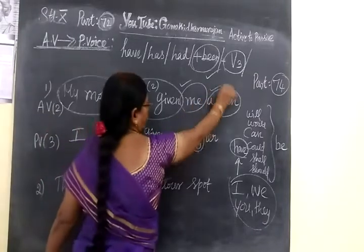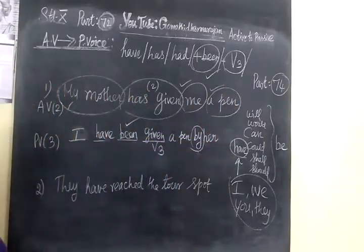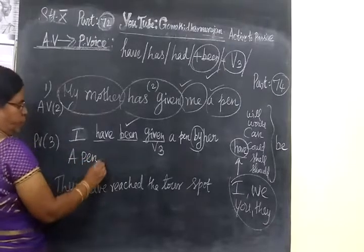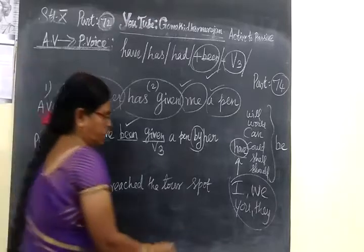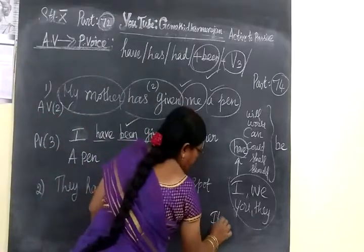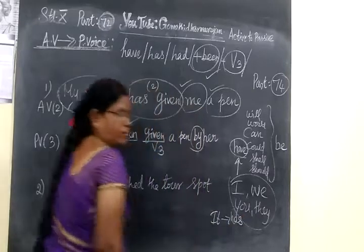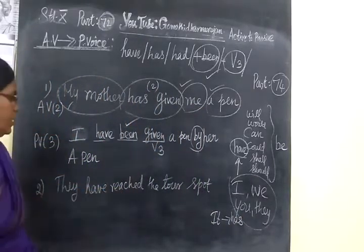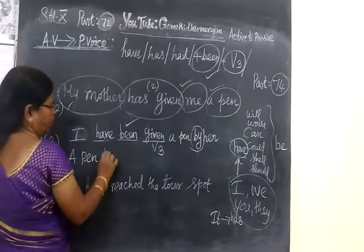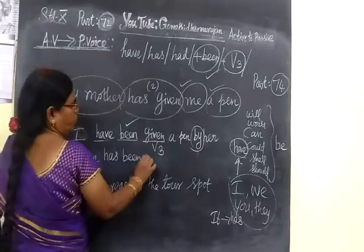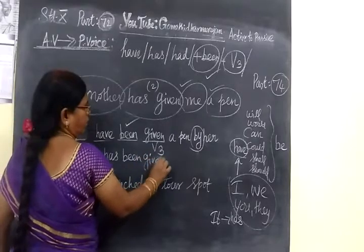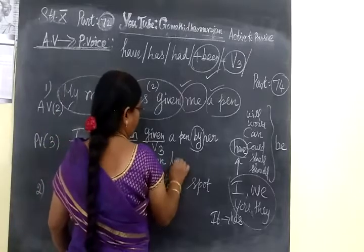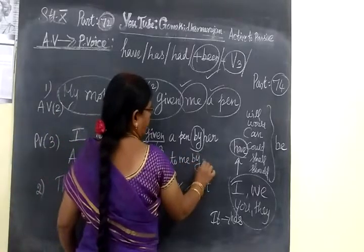The pen is a direct object. A pen. Has. I, we, you, they. It is written. Has. No change at all. A pen has been given by my mother. A pen has been given to me by my mother.